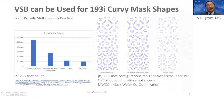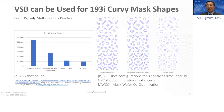Another potential reason is that VSP machines can do 193i curvilinear mask shapes. This is a previously announced discussion called Mask Wafer Co-Optimization or MWCO. Using overlapping shots with VSP writing, 193i masks can produce a roughly equal number of shots to produce both OPC shapes and these MWCO curvilinear shapes.